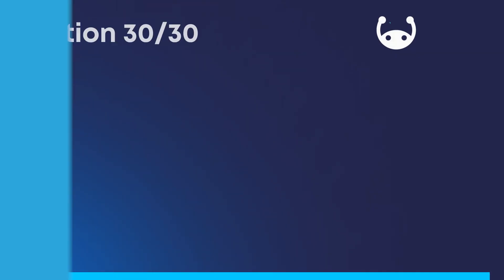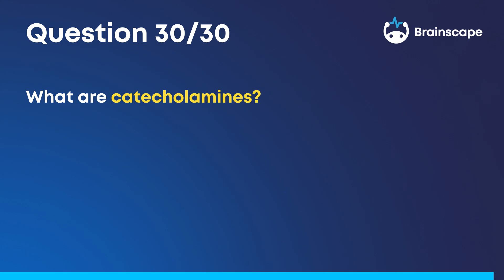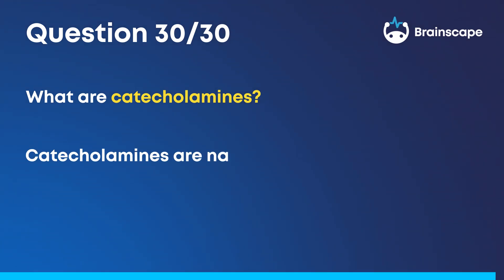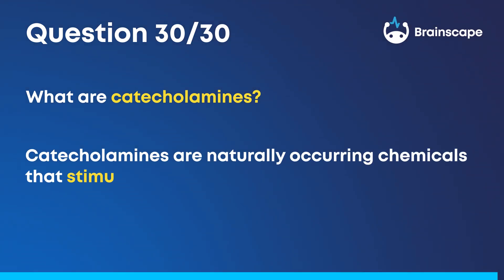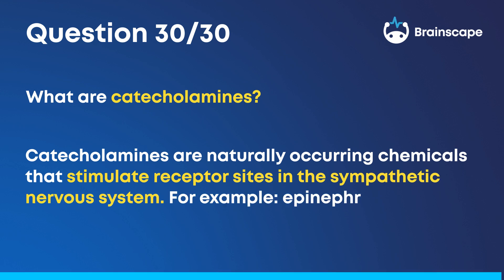Question 30. What are catecholamines? Catecholamines are naturally occurring chemicals that stimulate receptor sites in the sympathetic nervous system. For example, epinephrine, norepinephrine, and dopamine.